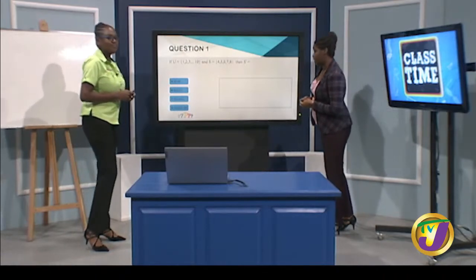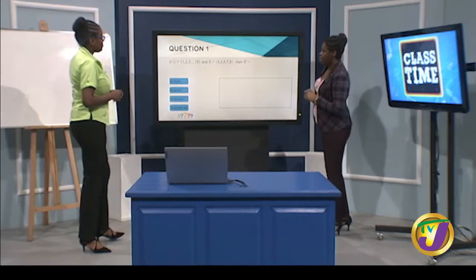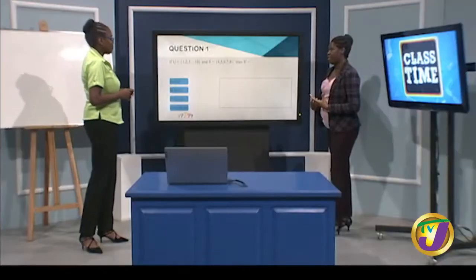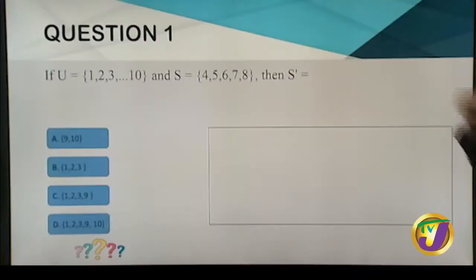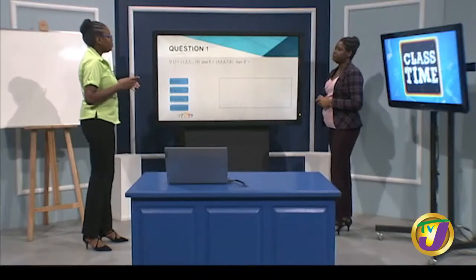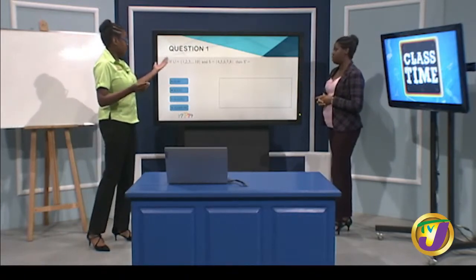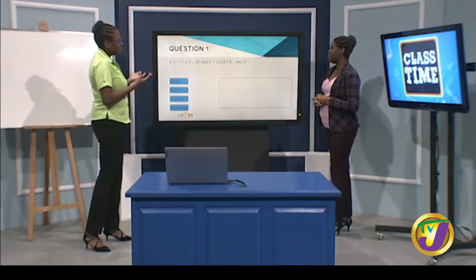Sets question one: the universal set U = {1, 2, 3, ..., 10} and set S = {4, 5, 6, 7, 8}. Find S complement. The complement of S means elements not in S but still in the universal set. The universal set contains the counting numbers 1 to 10, and S has 4, 5, 6, 7, 8.